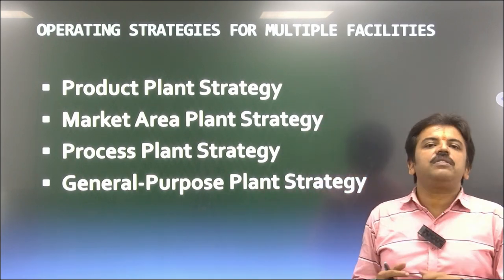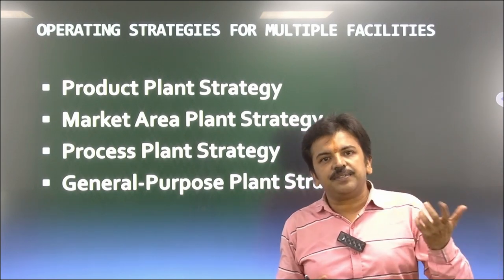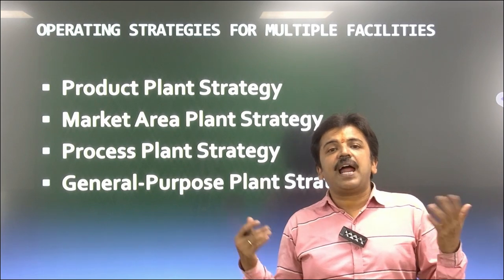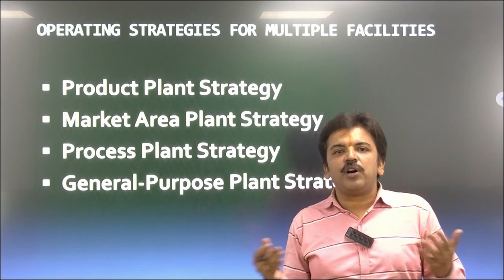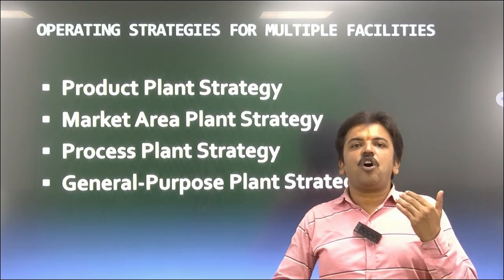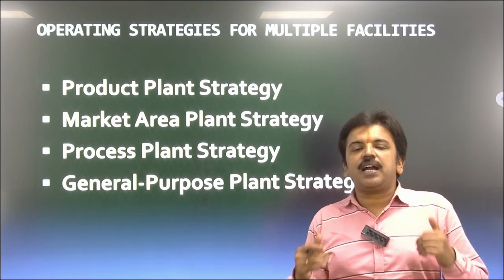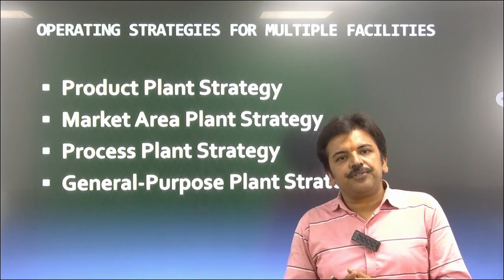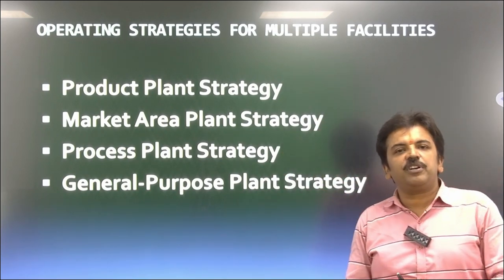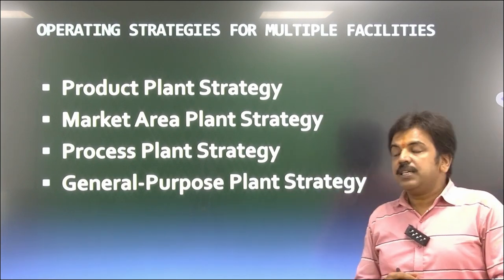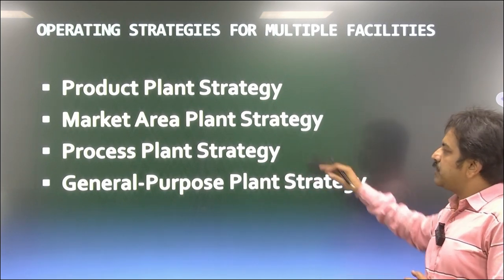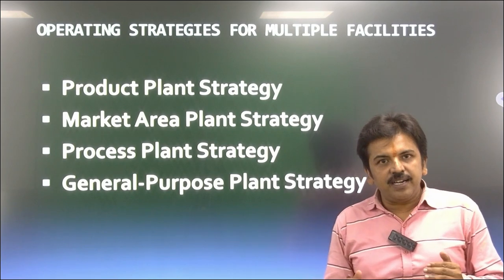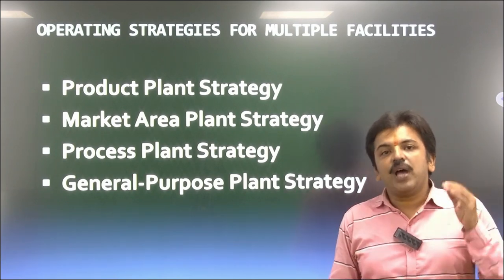The word strategy is derived from the French word 'astragia,' meaning preparing for a war that has not yet happened. In the modern competitive world, there is no war as such, but we make strategies so that our product fits the market better than our competitors. The four strategies are: first, product plant strategy; second, market area plant strategy; third, process plant strategy; and fourth, general purpose plant strategy.